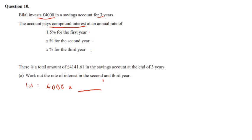Now to work out my multiplier, what I would do, because it's increasing, I would do 100% plus 1.5%, which is 101.5%. And then I would convert that into a decimal by dividing by 100, which gives 1.015.